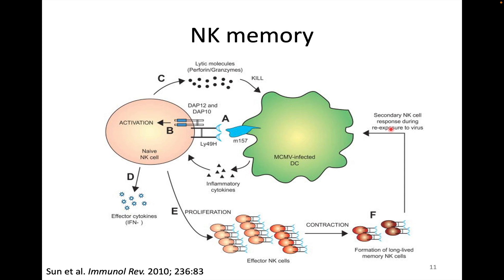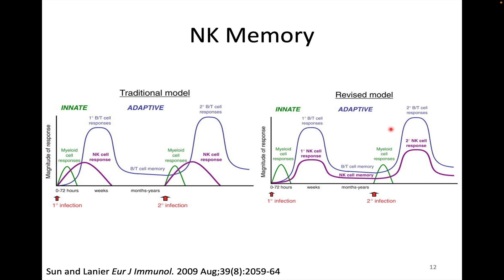In some ways this might make one want to say NK cells are just NK cells. We've since come up with a model. At the beginning, innate immune responses happen early and are the same upon first or second infection. NK cells are a little bit later and also similar with first or second infection. Adaptive responses change with secondary infection. But as we learned more about NK cell memory, we could see differences in the myeloid cell response and the fact that there are both primary and secondary NK responses.